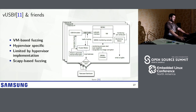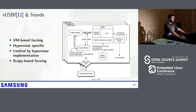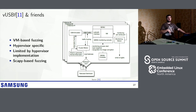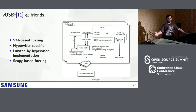Another approach to fuzzing USB drivers is using virtual machines. There is a framework called VUSBF and similar variations — the idea is to abuse the USB passthrough functionality of hypervisors. Instead of providing a real USB device to the virtual machine, you provide a daemon that generates USB traffic. This way, instead of managing physical devices, you just start virtual machines, get better coverage, and get results faster because you can execute them in parallel.